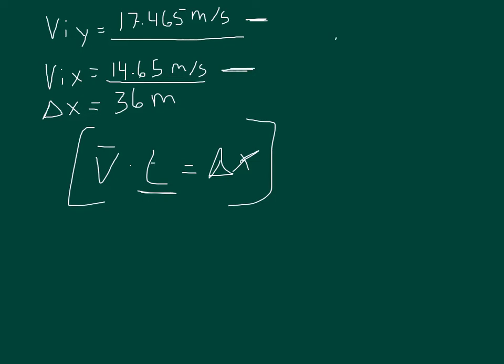We can solve for the time variable: time equals delta X divided by the average velocity. So if we plug in 36 divided by 14.65, that equals about 2.46 seconds.